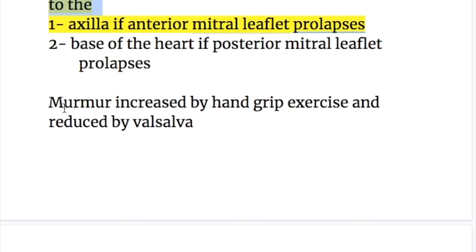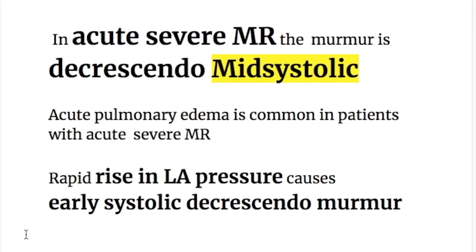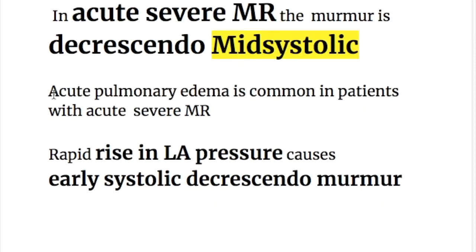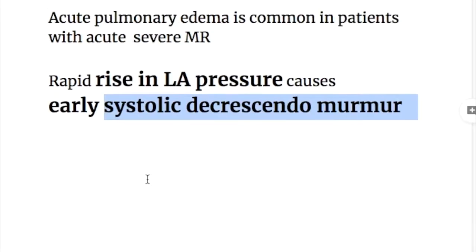The mitral regurgitation murmur is increased by hand grip exercise and decreased by the Valsalva maneuver. In acute severe mitral regurgitation, the murmur is decrescendo midsystolic. Acute pulmonary edema is common in patients with acute severe mitral regurgitation. A rapid rise in left atrial pressure causes an early systolic decrescendo murmur.